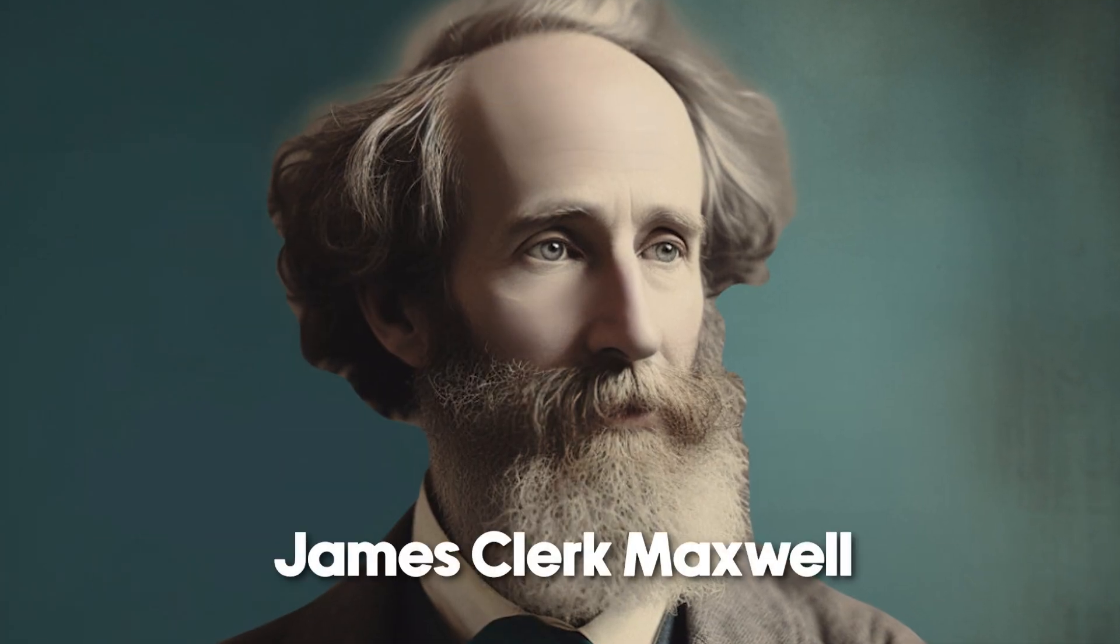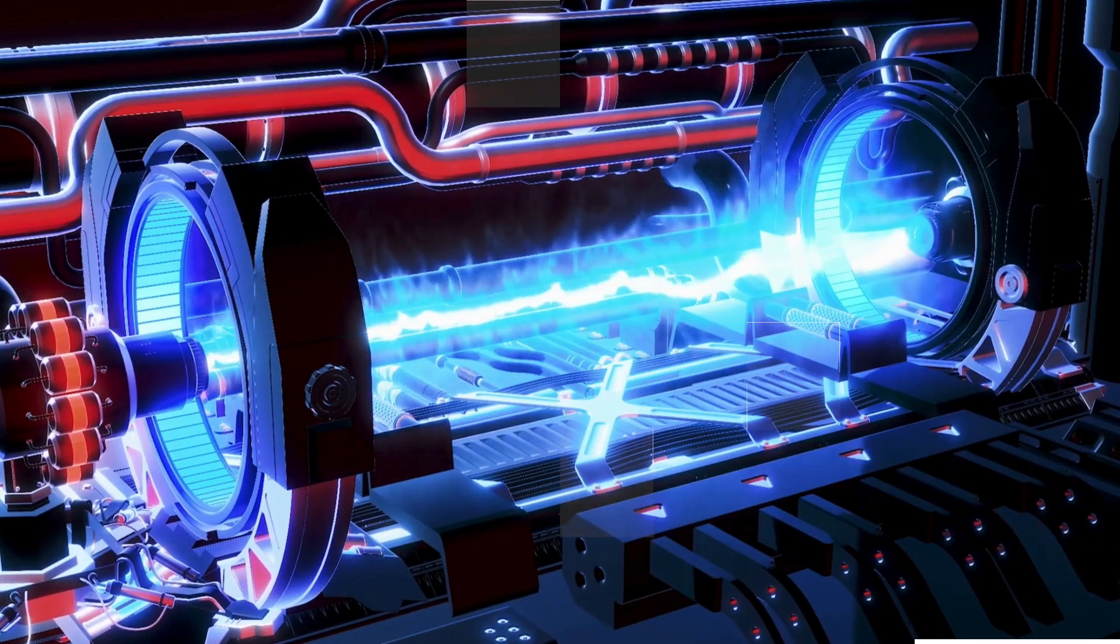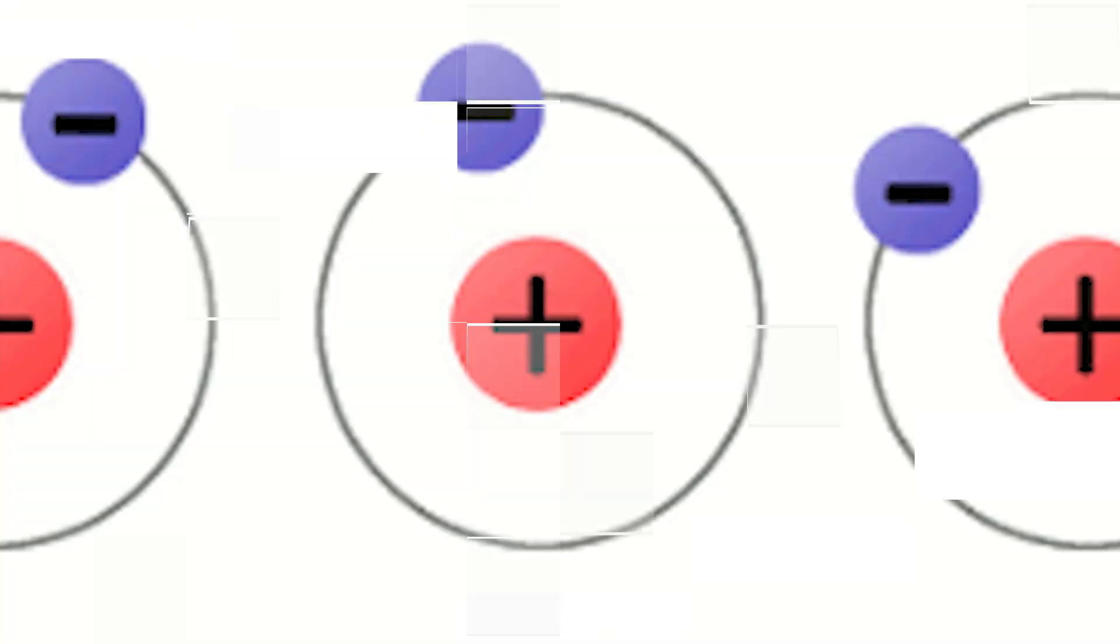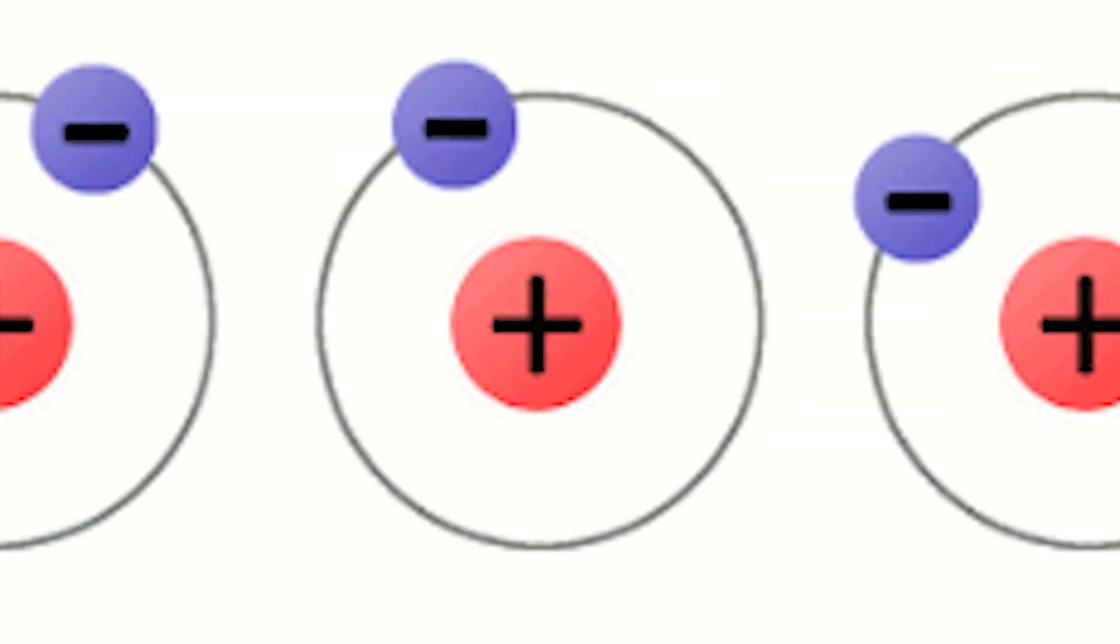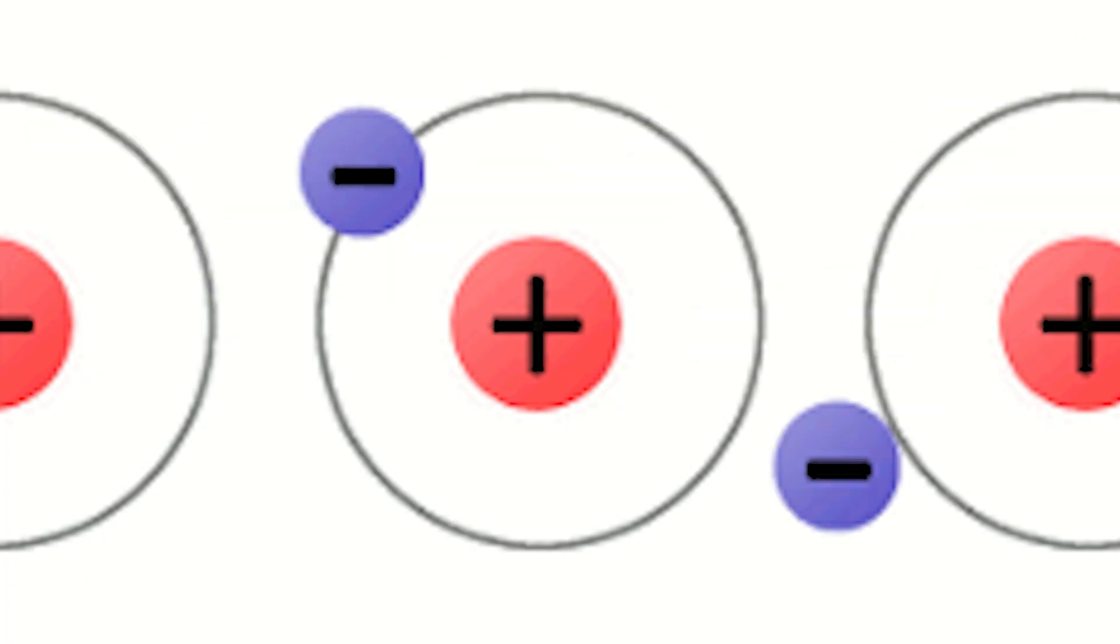James Clerk Maxwell figured this out, leading to the field of electromagnetism. Moving electric charges create a magnetic field, and vice versa, which is how electricity and magnets talk to each other.